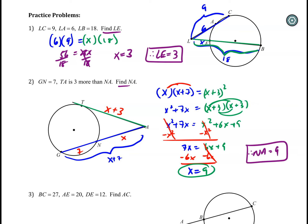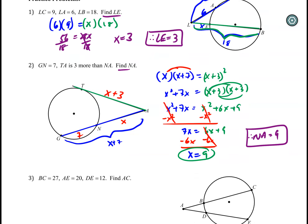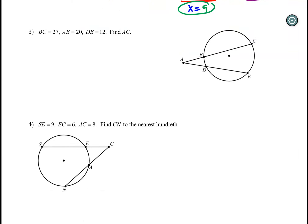The setup is the key. This example intentionally had a bit more algebra to show how it can get more involved, but that's really the meat of the problem. If you can set up the equation correctly, the rest is just algebra — factoring, foiling, combining like terms. I'll let you pause the video and try the next two problems on your own, then come back to check your answers.